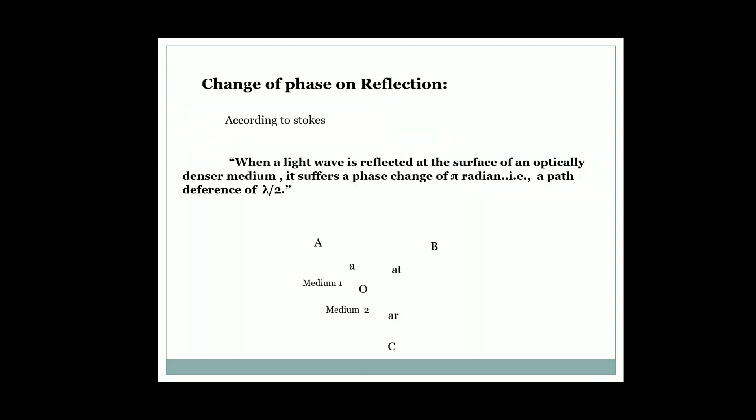We know, according to Stokes' law, when a light ray is reflected at the denser medium from the rarer medium, it suffers a phase change of pi radian. This means the path difference is lambda by 2. In this presentation, we will prove this.